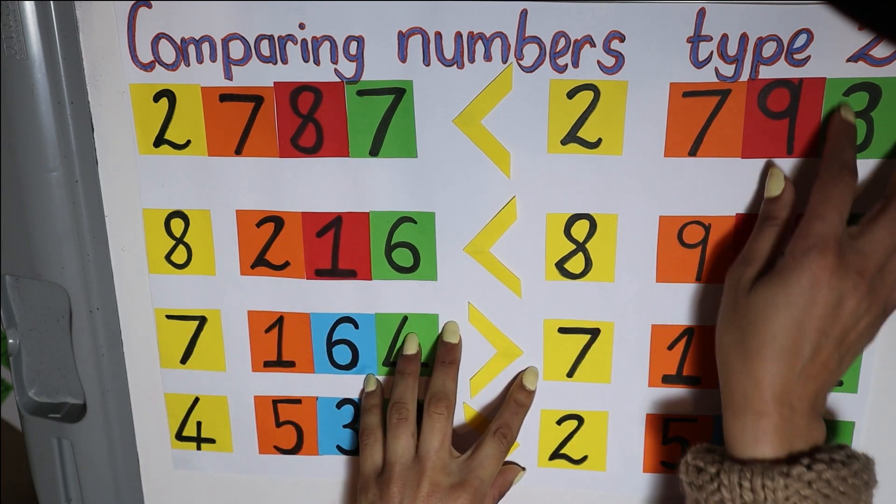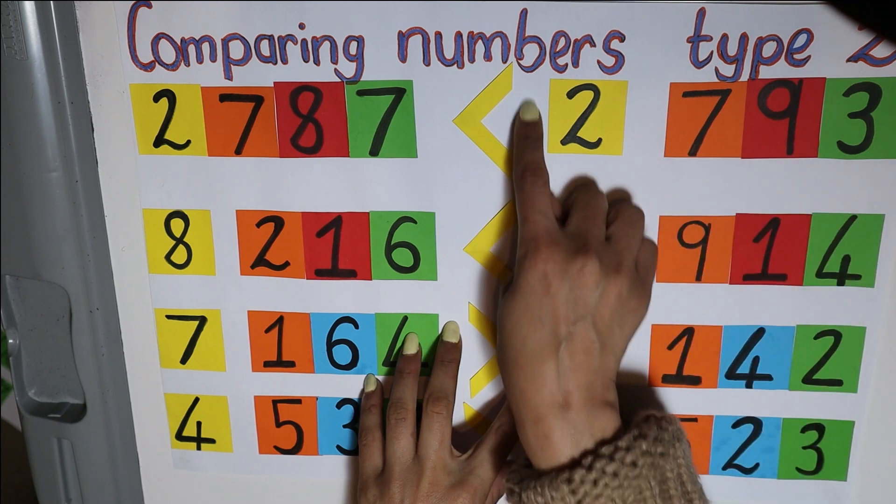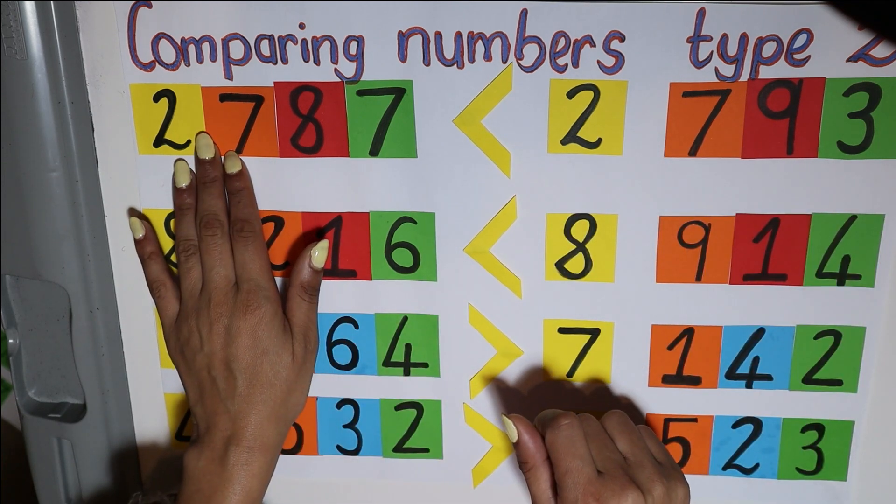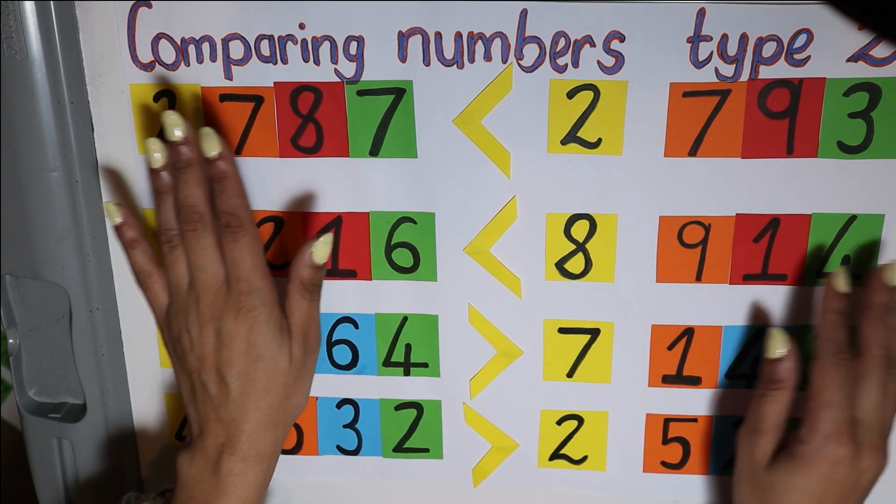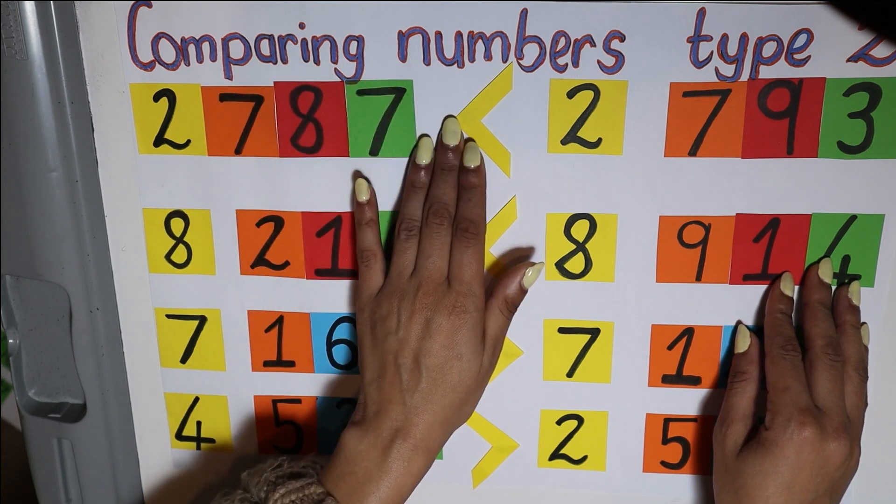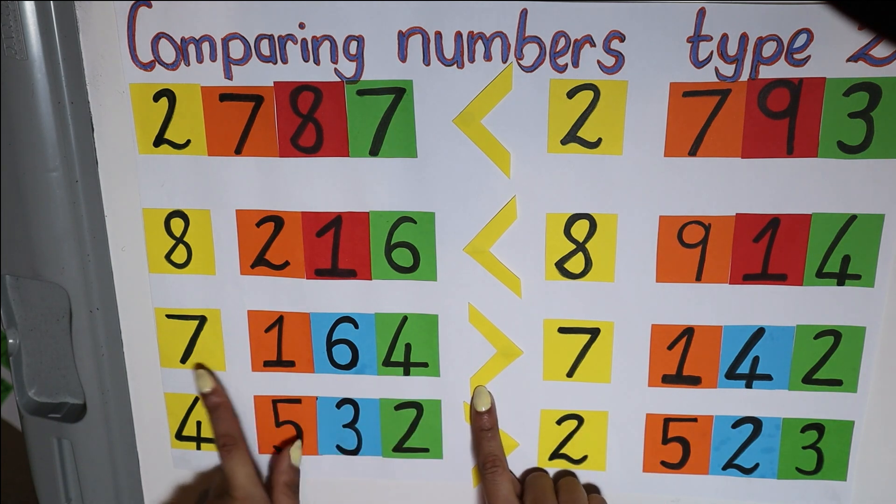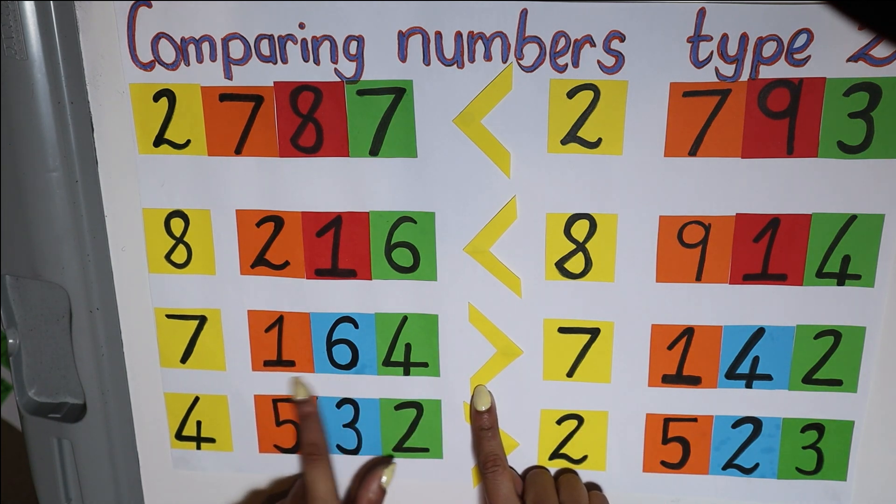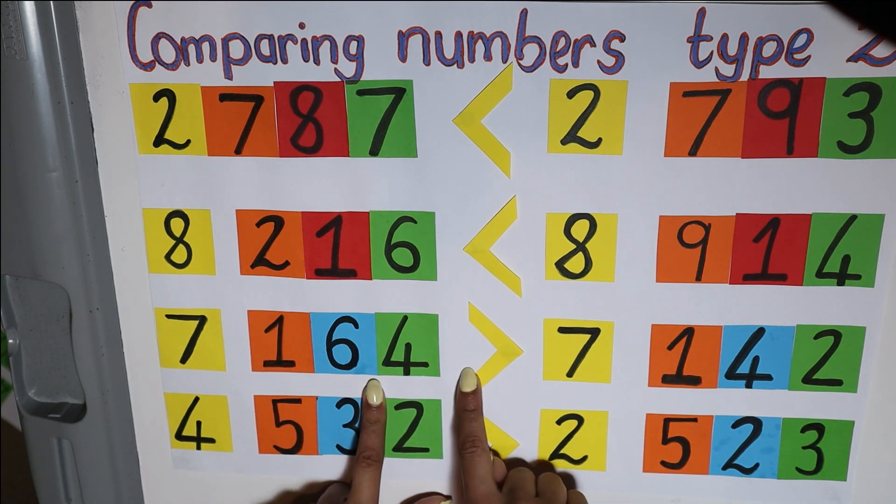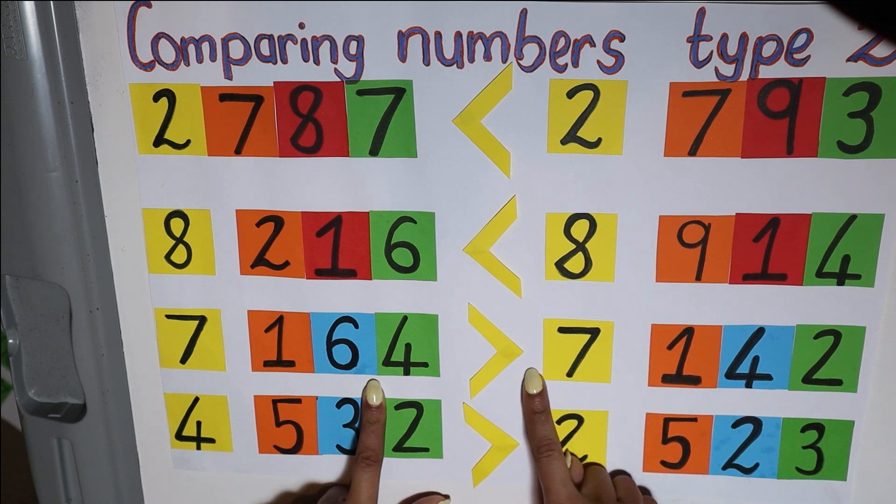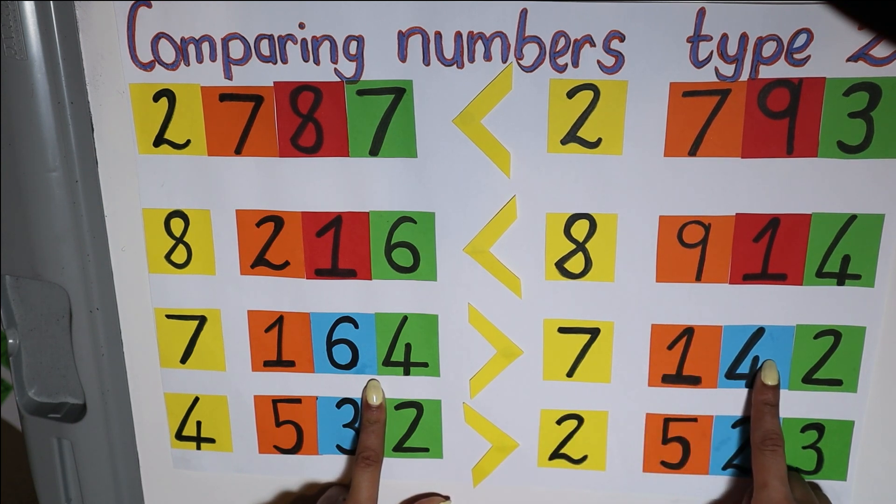So remember, this number was bigger because it was open this side. So this from left to right means this number over here would be less than this number. If I look at the third one, 7,174 is more than 7,142.